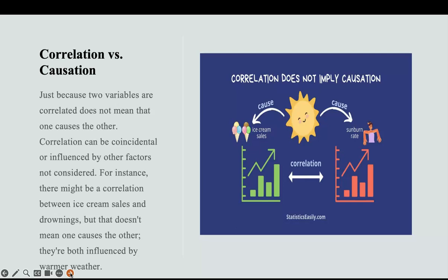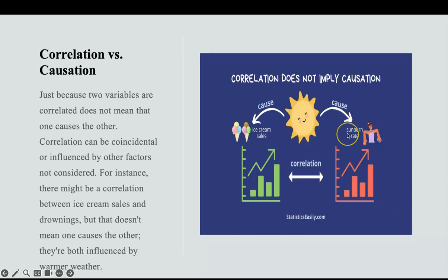Correlation versus causation. Just because two variables are correlated does not mean that one causes the other. Let's take a look at the picture: ice cream sales and sunburn rate. If you put this data in a spreadsheet, you'll probably come up with a high correlation, but there's an extra factor — an influencer — the weather, the sun. The sun influences both ice cream sales and sunburn rate. Just because you have a high correlation doesn't mean there is causation. Also be mindful: ice cream sales and drowning both have a common influence of warm weather.